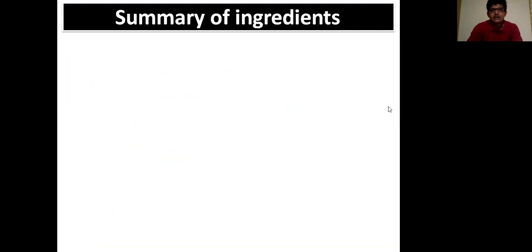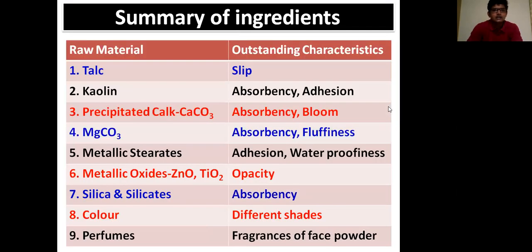Here is a summary of the 9 ingredients used in face powder and their key properties: talc gives slip; kaolin gives absorbency and adhesion; precipitated chalk (calcium carbonate) gives absorbency and bloom; magnesium carbonate gives absorbency and fluffiness; metallic stearates give adhesion and waterproofing; metal oxides (zinc oxide and titanium dioxide) provide opacity; silicas and silicates give absorbency; colors provide different shades; and perfumes give fragrance.